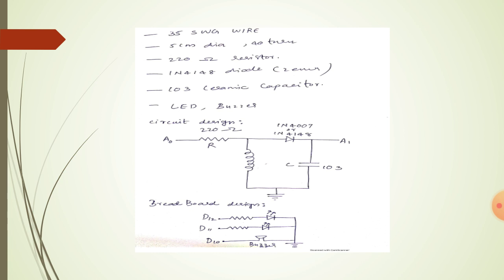Our own circuit and code to create the perfect metal detection. In this, we have used 35 SWG wire, LED, buzzer, 103 ceramic capacitor, 1N418 diode, and 220 ohm resistor. The wire coil has 40 turns and 5 cm diameter.